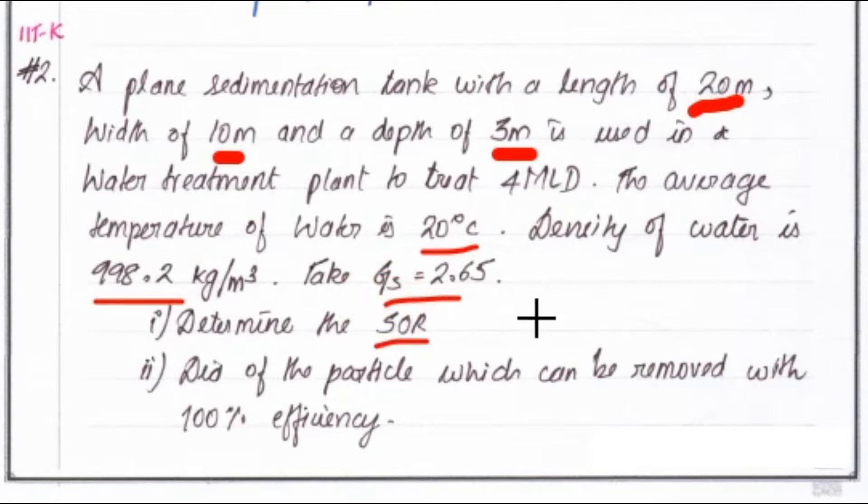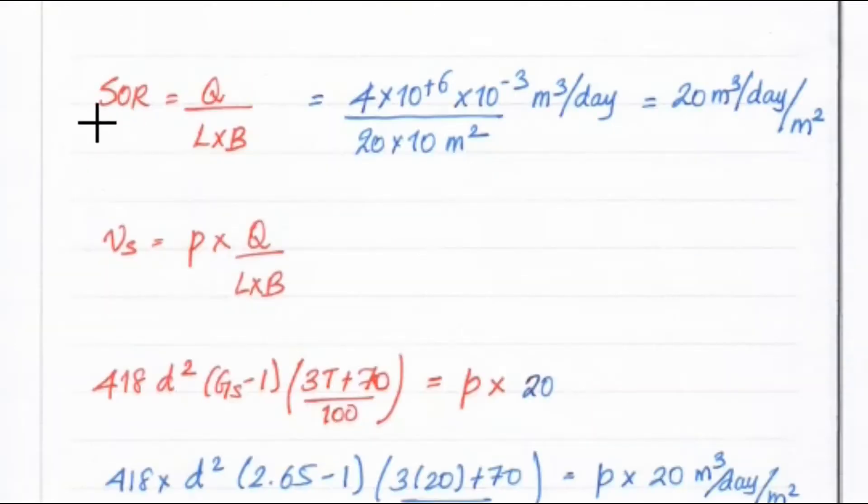We have to find out the SOR, that is surface overflow rate. Then second one is diameter of the particle which can be removed with 100% efficiency. Now we know the formula for SOR equal to Q divided by L and B. So that is area.